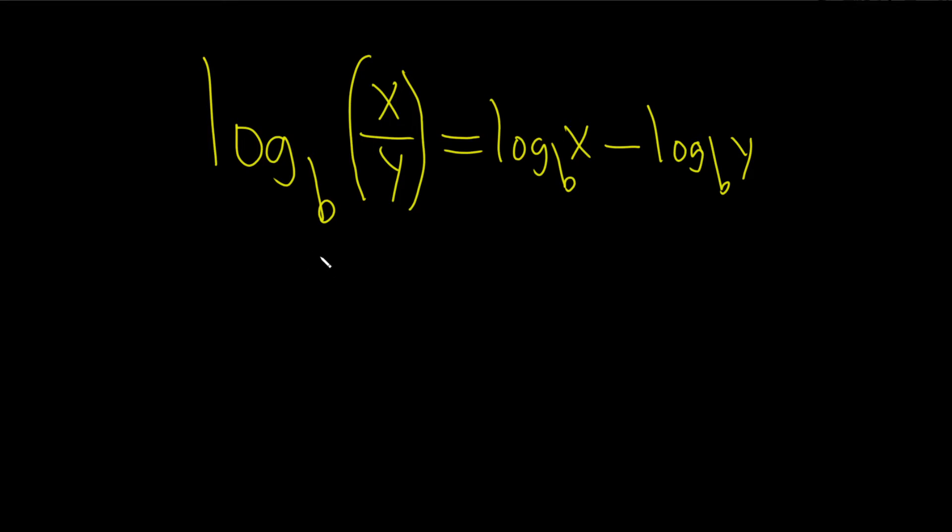In this video, we're going to prove or verify the quotient rule for logarithms. Here, x and y are positive numbers, and b is a base, so it's bigger than 0 and it's not equal to 1.